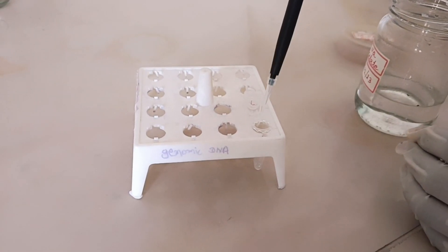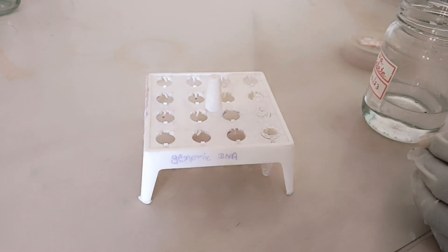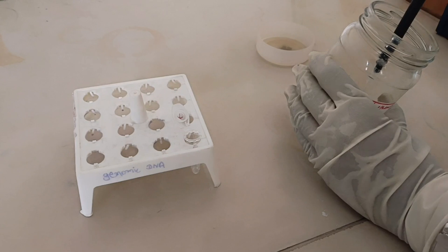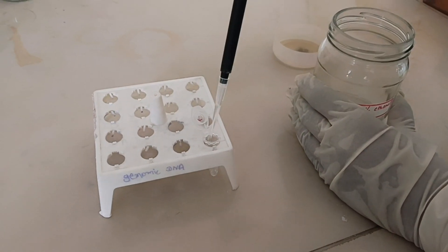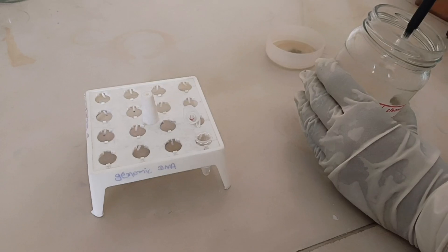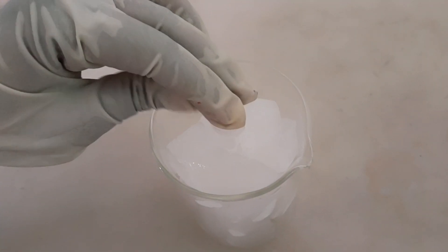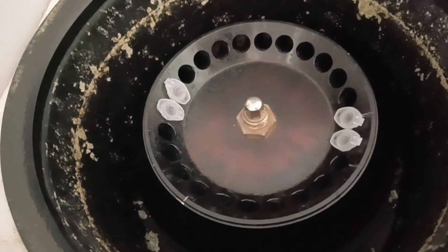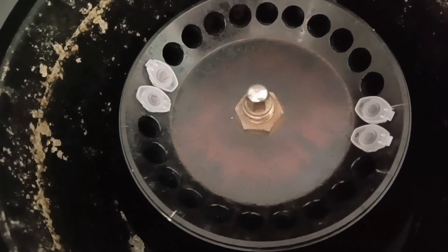Add 0.1 volume of sodium acetate. Add 2.5 volume of 100% ice-cold ethanol. Put the tubes on ice for 15 to 20 minutes. Centrifuge the tubes at 10,000 rpm for 10 minutes.